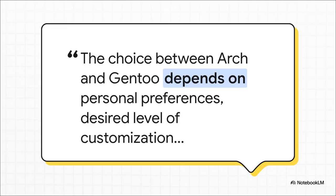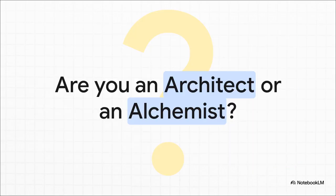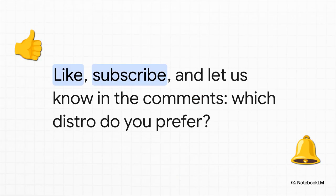It's not about which one is better — it's about what you value more. Do you want a fast, modern system that you can assemble efficiently? Or do you want an incredibly intricate system that you can truly, deeply create from its very essence? In the end, the choice isn't just a technical one — it's a personal one. Are you looking for the elegant efficiency of the architect, or the deep, transformative power of the alchemist? The answer says a lot, not just about the kind of system you want to build, but about the kind of builder you want to be. So which one are you? Let us know in the comments — are you on Team Architect or Team Alchemist? Thanks so much for tuning in.